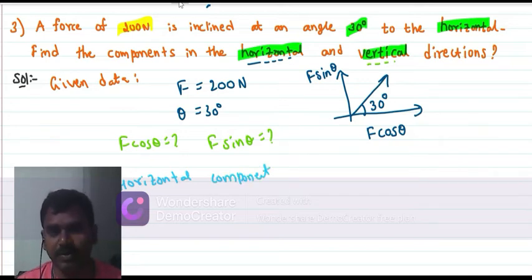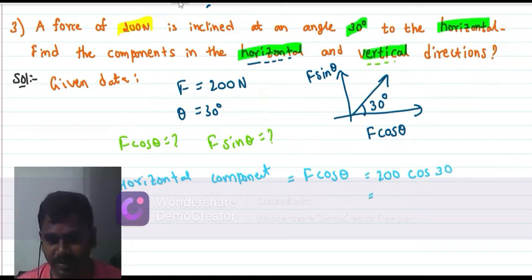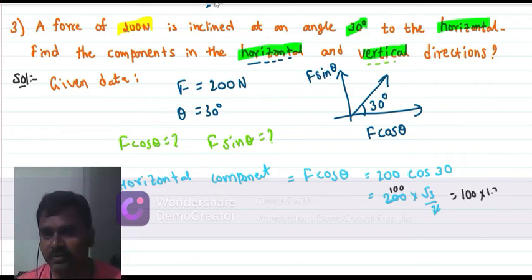Horizontal component equals F cos theta. F is equal to 200N cos 30 degrees. 100 times cancels, 100 into root 3 is 1.732. Therefore, horizontal component is equal to 100 into 1.732, which is 173.2N.